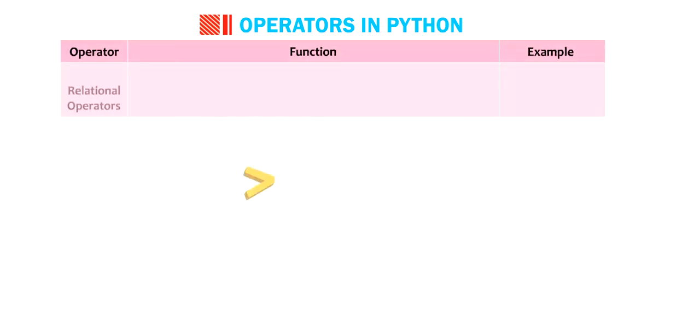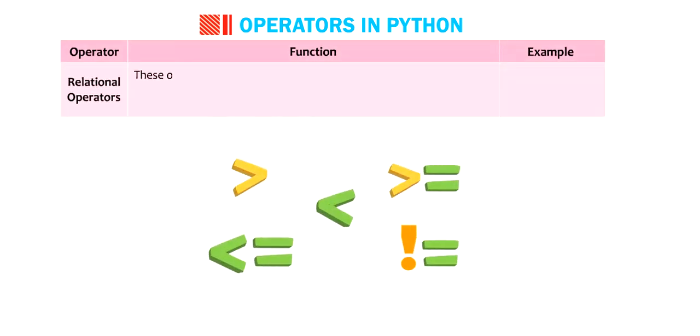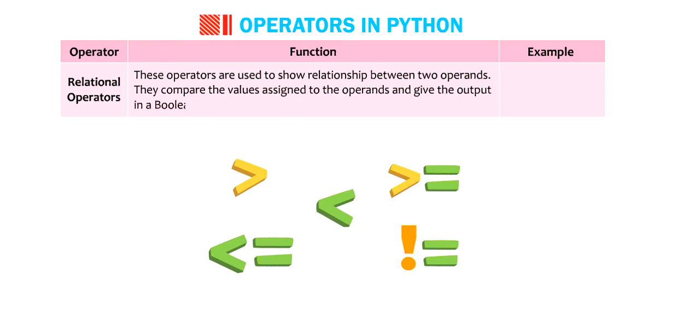Program. Operator. Relational operators. These operators are used to show relationship between two operands. They compare the values assigned to the operands and give the output in a boolean expression.